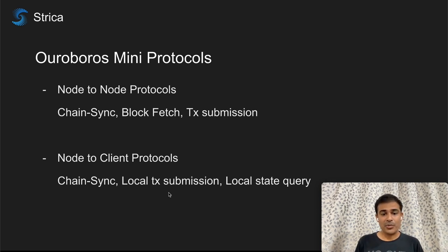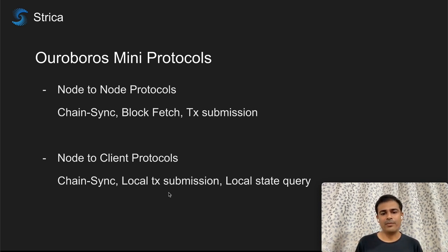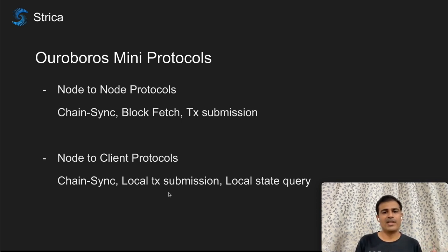Node-to-node protocols are used to communicate between relays and producers, while node-to-client protocols can be used by applications like Cardano Scan to talk to a Cardano node and fetch information, and can also be used by wallets to submit transactions. Whenever you submit a transaction on Typhon Wallet, it goes through the local transaction submission protocol.